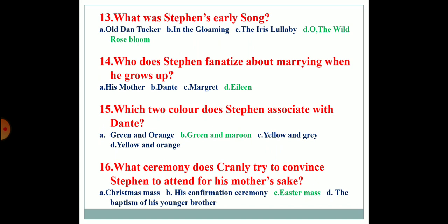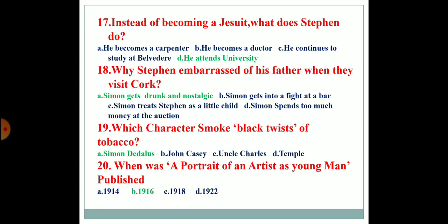Which two colors does Stephen associate with Dante? The two colors are green and maroon. What ceremony does Cranley try to convince Stephen to attend for his mother's sake? Easter Mass. Instead of becoming a Jesuit, what does Stephen do? He attends university. Why is Stephen embarrassed of his father when they visit Cork? He's embarrassed because Simon gets drunk and nostalgic. Which character smokes black twists of tobacco? It's Simon Daedalus. When was A Portrait of the Artist as a Young Man published? It was published in 1916.